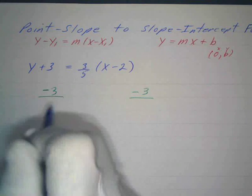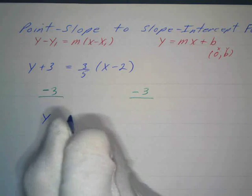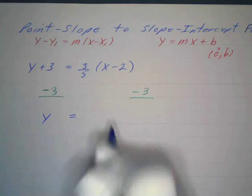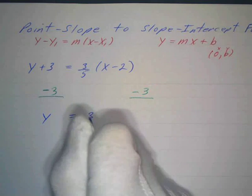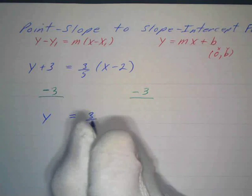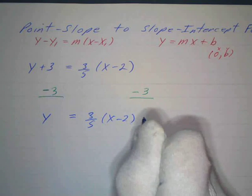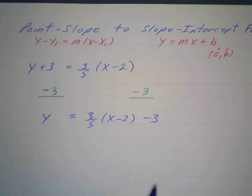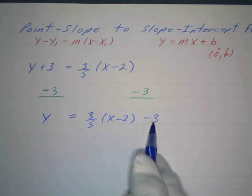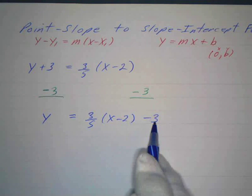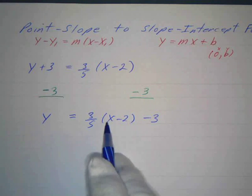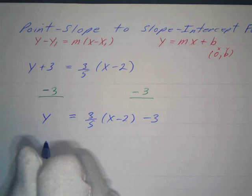Positive 3 and negative 3 is 0, so we just have y equals on the left, which is nice. We've got the 3 fifths times x minus 2 minus 3. Now we're almost done, except we've got a number here and a number here that we can probably combine if we remove this parentheses, so we use the distributive property to remove the parentheses.